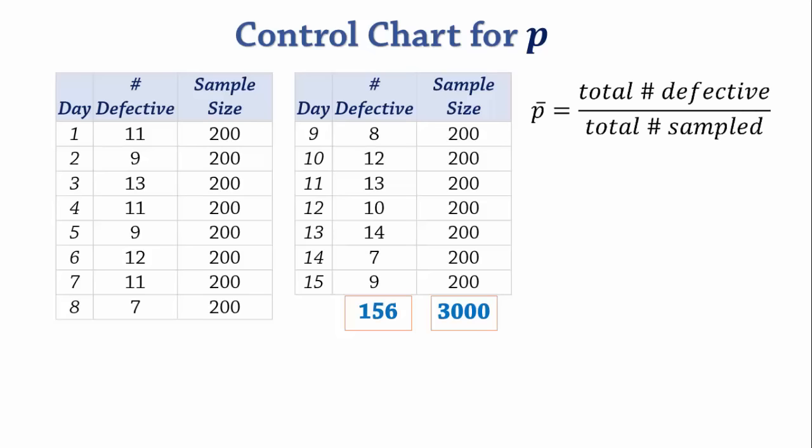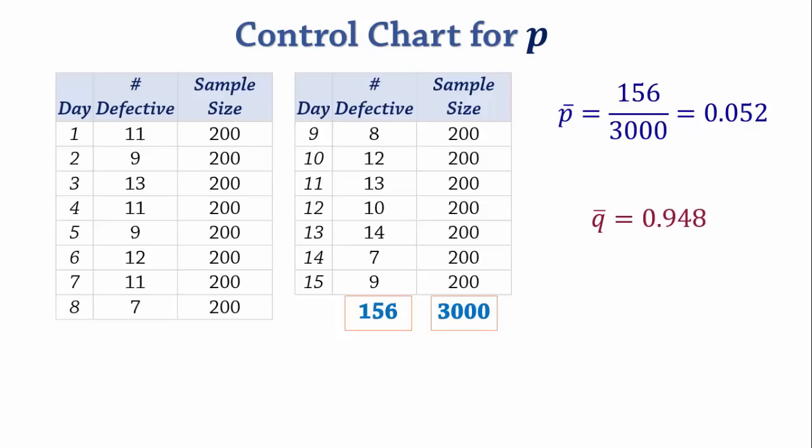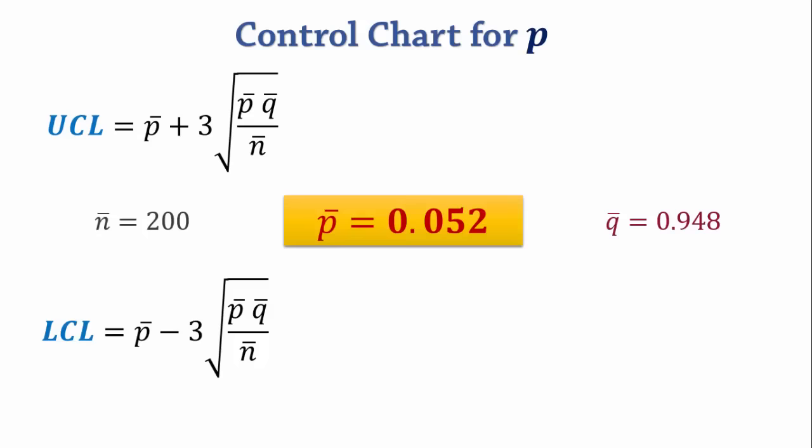Consequently, q-bar is 1 minus 0.052, which gives 0.948. The average of the sample sizes n-bar is 200, since every sample size is 200. Now that we have the 3 required values, we can now calculate UCL and LCL.